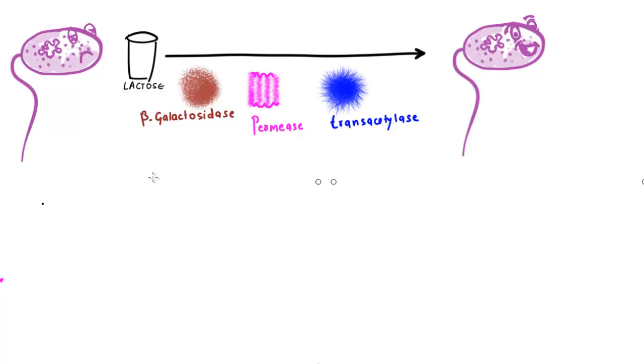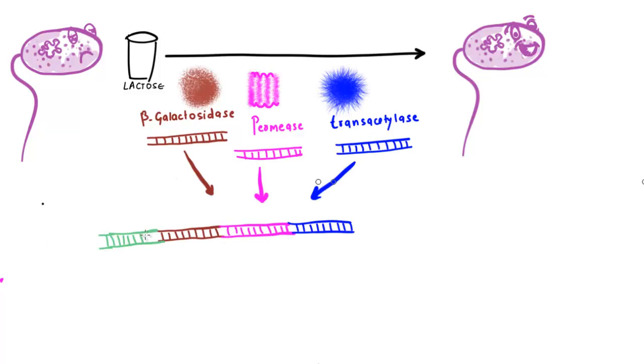What bacteria can do? It can take the respective genes of each enzyme and place it adjacent to each other under one promoter and one terminator. And this is nothing but an operon.